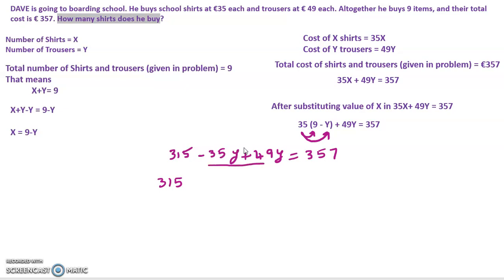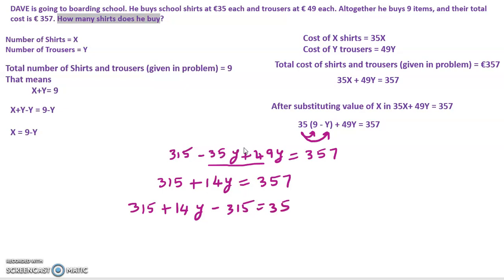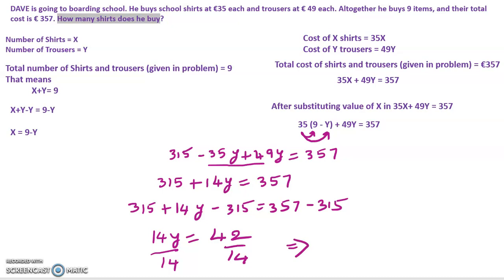Now I subtract 315 from both sides. Combining the y terms: minus 35y plus 49y gives 14y. So 14y equals 357 minus 315, which is 42. Dividing both sides by 14, y is equal to 3.